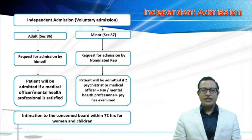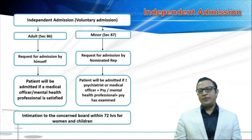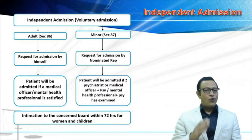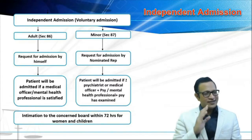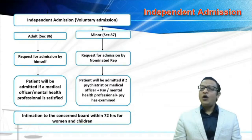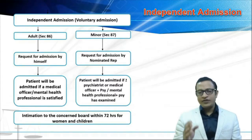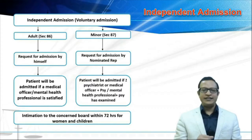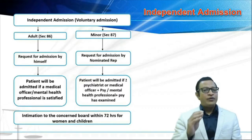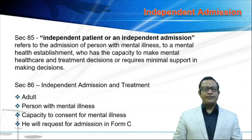Coming to the independent admission, there are two types of independent admission. One for adult, which falls under section 86, and one for minor, which falls under section 87. We are going to discuss them now one after the other.